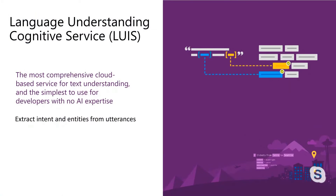So what is language understanding? LUIS is an AI service that allows developers without specific AI expertise to build natural language understanding into their applications. You can extract intents and entities from your text so that your applications can understand what your user is trying to do and then process those requests.